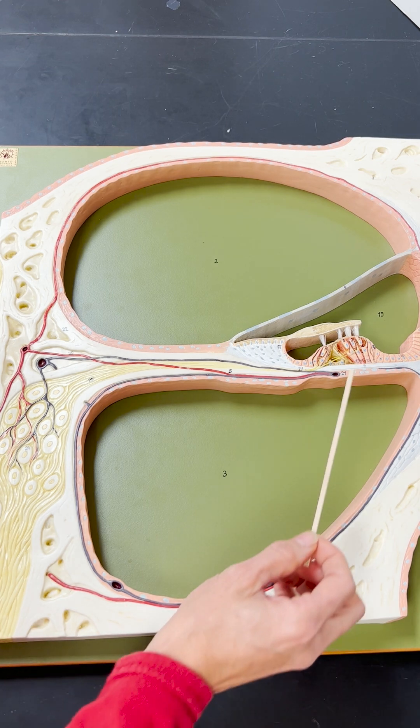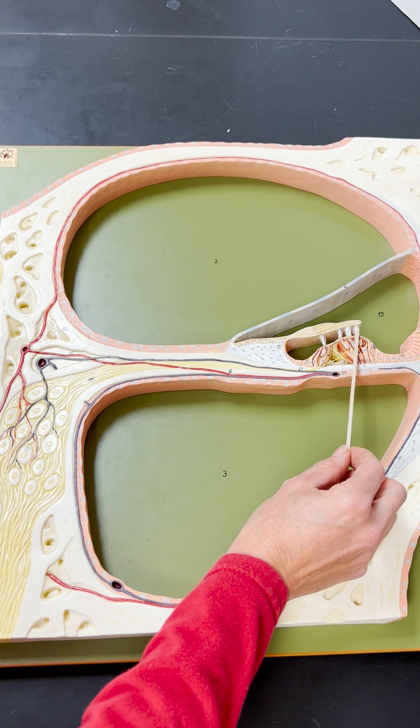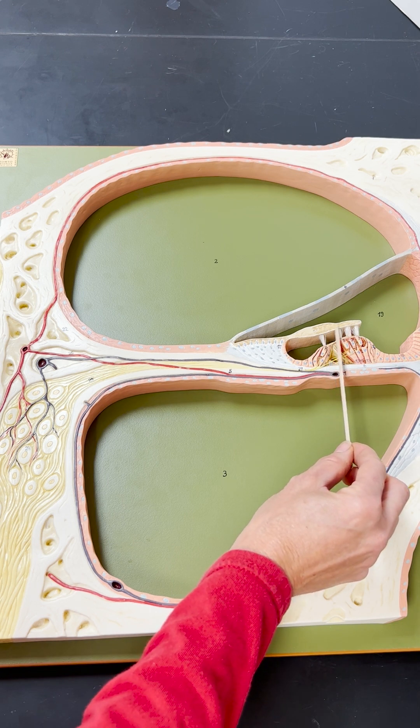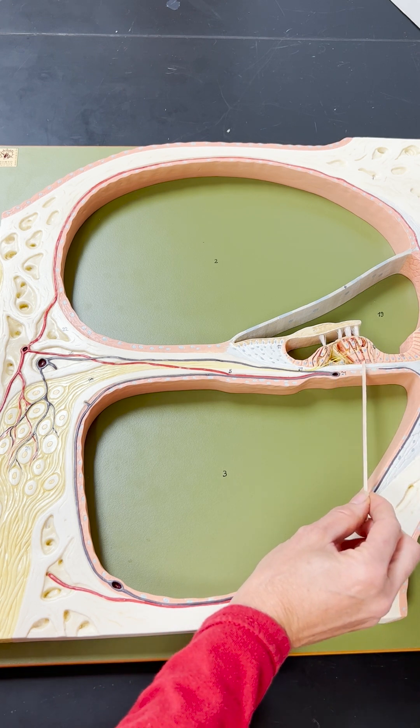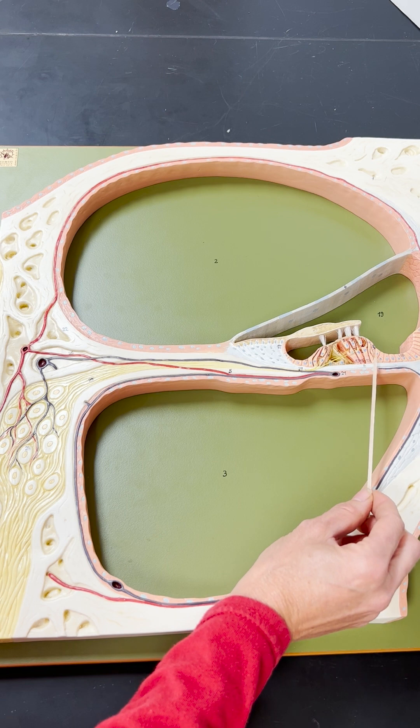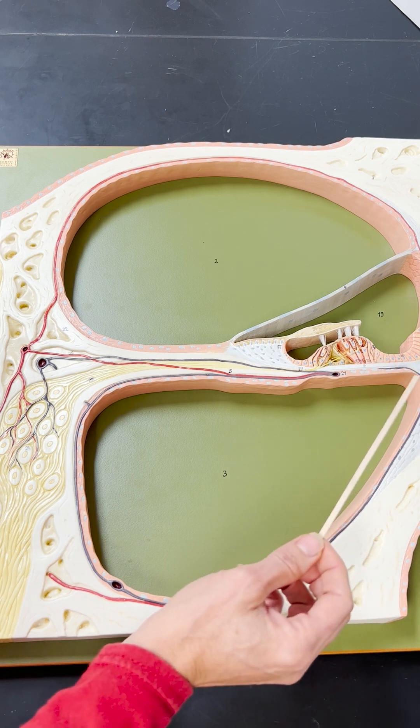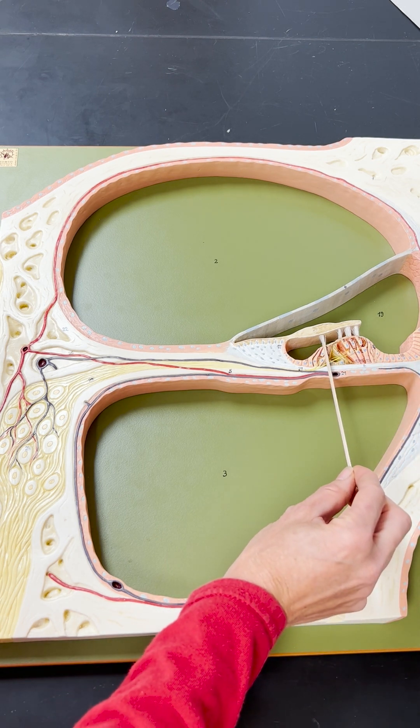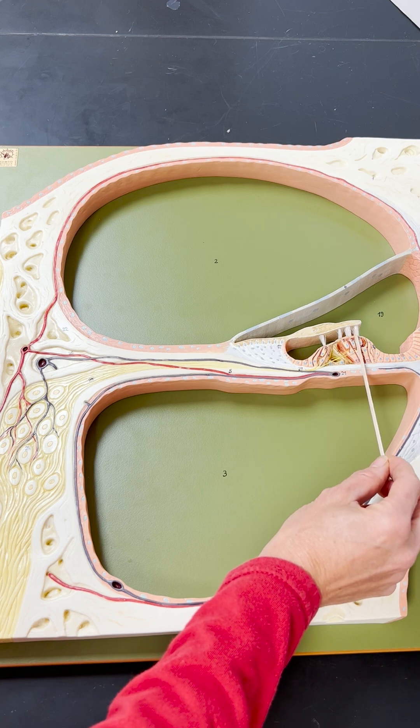Supporting cells do not have the stereocilia and aren't connected to the tectoral membrane. Instead, they are down below and support the hair cells. You have inner hair cells and outer hair cells.